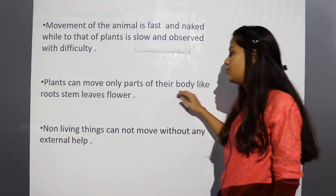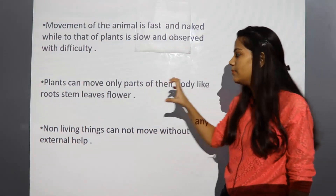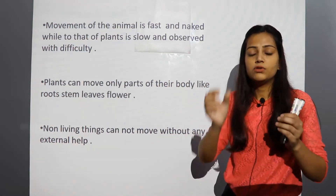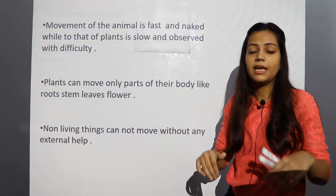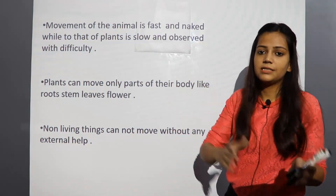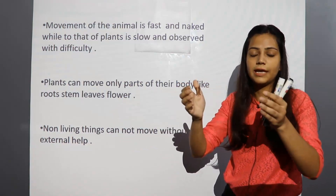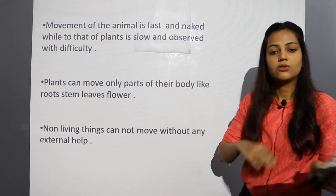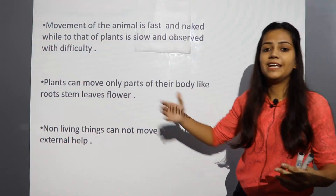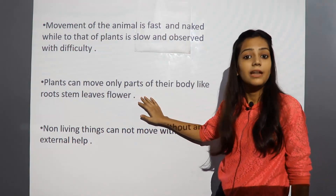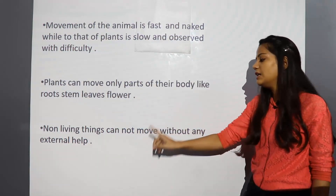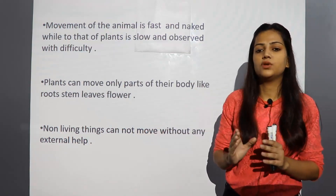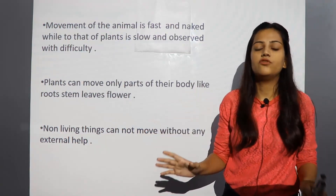Plants can move parts of their body like root, stem, leaves, and flowers. When a plant is small, its stem is thin, roots are few, leaves are small. As the plant grows, its stem becomes thicker — all these things indicate that the plant is also living. Non-living things cannot move without any external help. A stone needs force to go from one place to another. This marker moves only when I push it — otherwise it stays still.